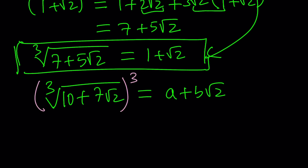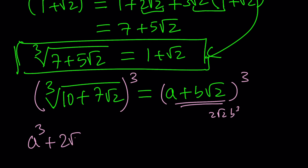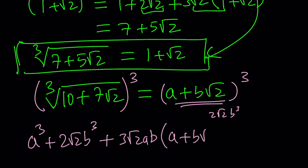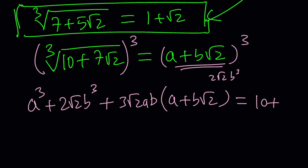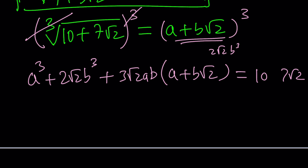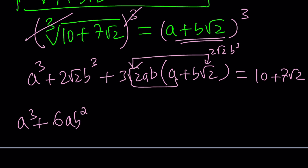So we set the cube root of (10 + 7√2) equal to a + b√2. The next step is cubing both sides to eliminate the radical. Using the formula: a³ + (b√2)³ gives 2b³√2, and 3ab·(a + b√2) distributes to give 3a²b·√2 and 6ab².